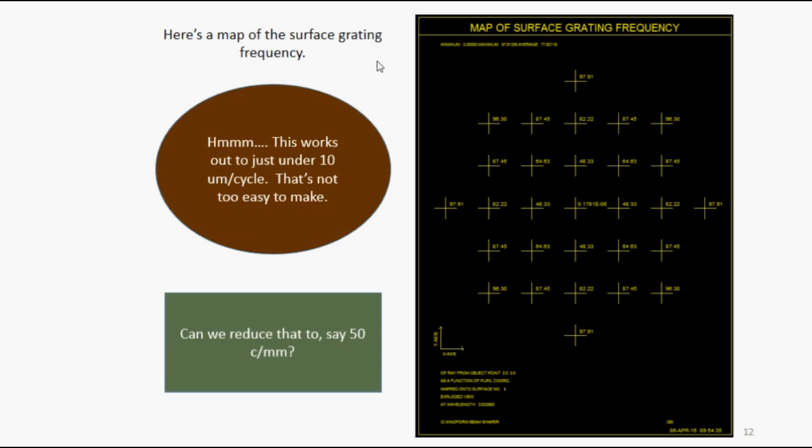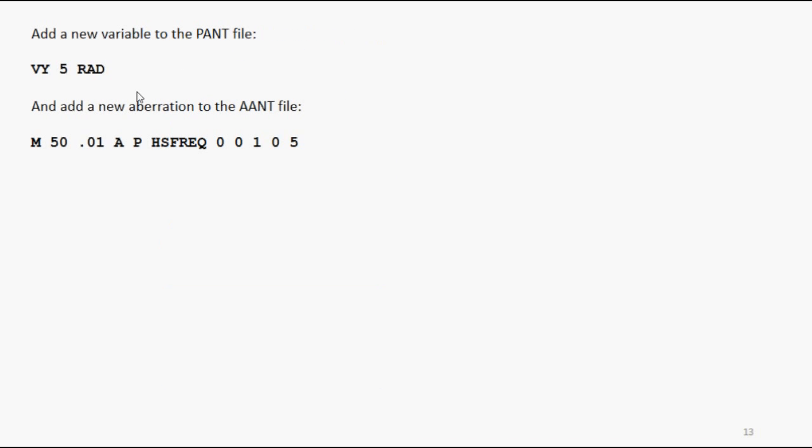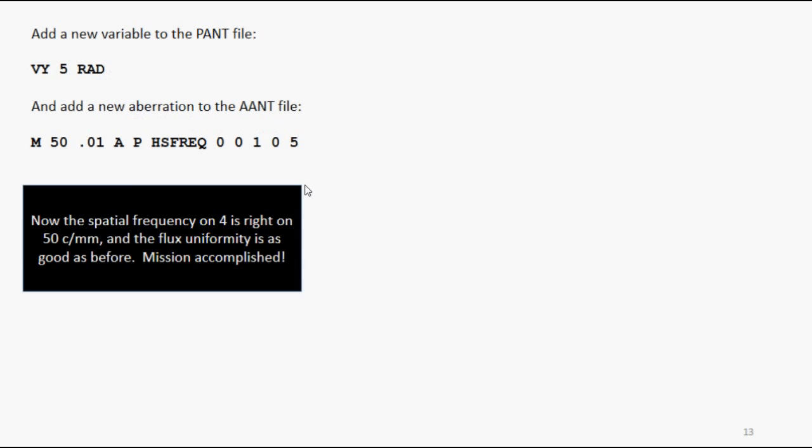So just as an exercise, let's see if we can reduce that. Can we get that down to, say, 50 cycles per millimeter? Well, it's actually pretty easy to do. We can add a new variable to the pant file, surface 5 radius, which is flat at the moment. And we're going to add a new aberration to the ant file. Minimize to a target of 50, add in color p the surface frequency at upper rim ray on surface 5. So we run that. And the spatial frequency is right on 50. And the flux uniformity is just as good as before. It looks like we have accomplished our mission.